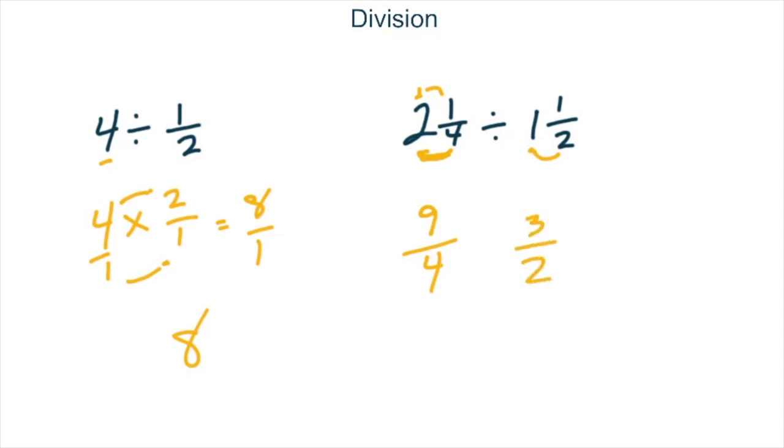Now, this is where it gets a little crazy. We have to do keep, change, flip. So now our problem becomes 9 over 4 times 2 over 3. And we can make our lives easier if we do some simplification. 9 and 3 have a common factor of 3. So if we divide the bottom number by 3, that becomes a 1. If we divide the top number by 3, that becomes a 3. And 4 and 2 have a common factor of 2. So if we divide 2 by 2 here, we get a 1. And if we divide 4 by 2 here, we get a 2. So our problem suddenly becomes 3 over 2 times 1 over 1, which is equal to 3 halves.